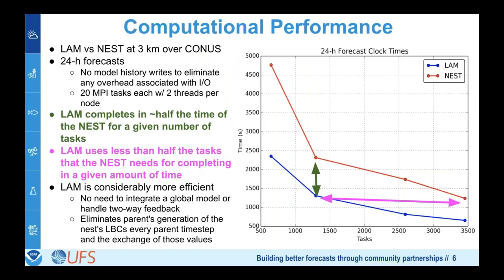Looking at computational performance: these are 24-hour forecast clock times with IO writes turned off. Everything runs with 20 MPI tasks and two threads per task per node. The limited area model completes in about half the time of the nest for a given number of tasks. It also requires far fewer tasks to match the same execution time. It's considerably more efficient because there's no need to integrate a global model or handle two-way feedback.